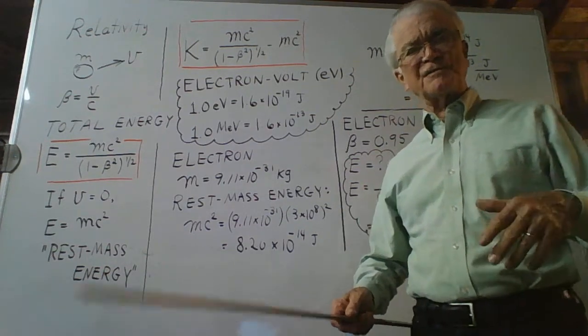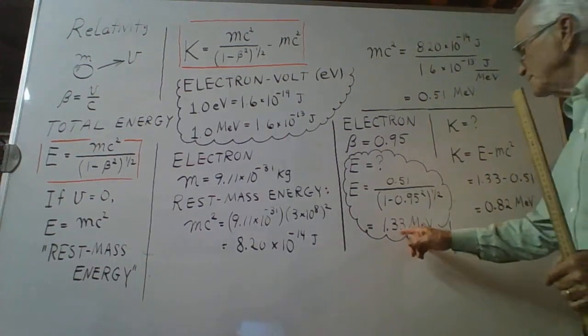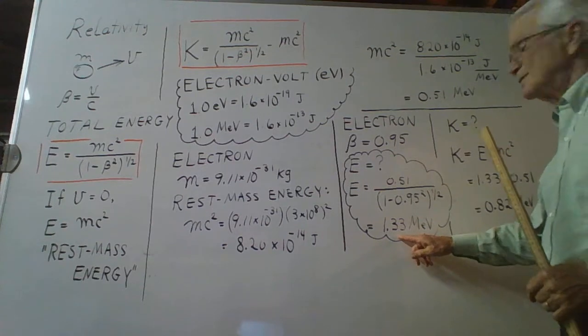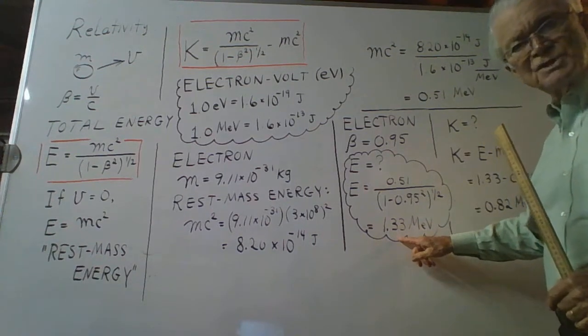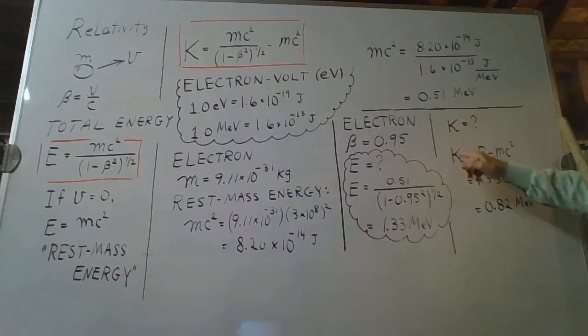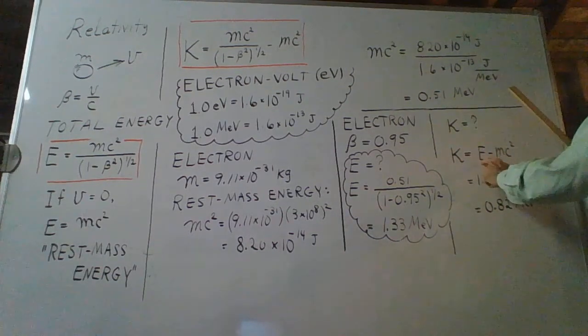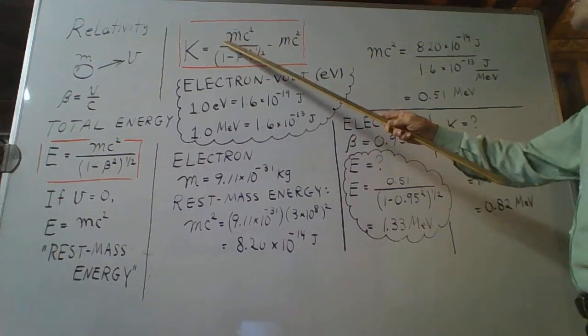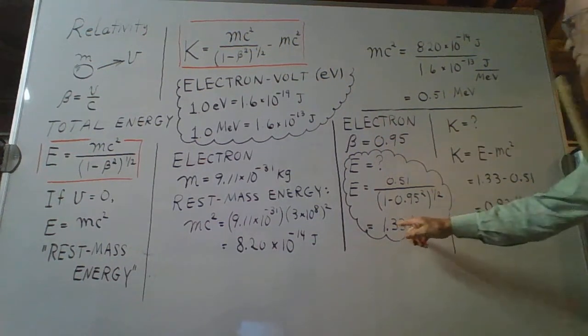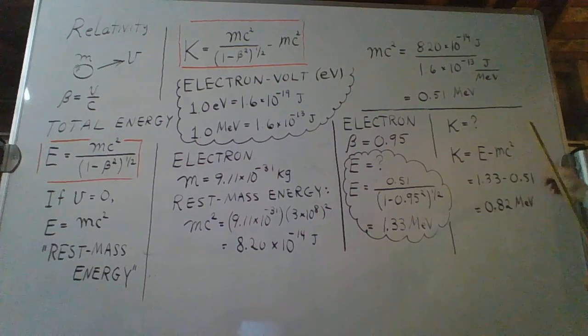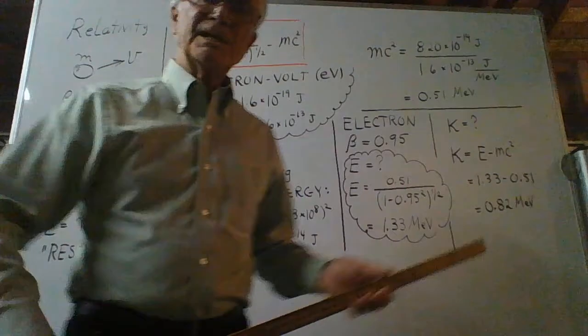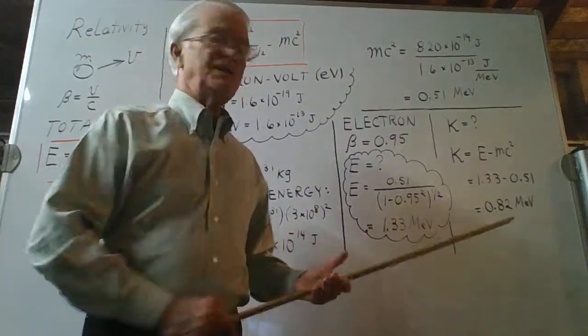And so we subtract from the total energy value we have here, 1.33 MeV, the rest mass energy that we found as 0.51. So here's the kinetic energy equation rewritten in this form. This is a long form where all of that is E. We just found E is 1.33, subtract 0.51. Final result, the kinetic energy of our object is 0.82 MeV.